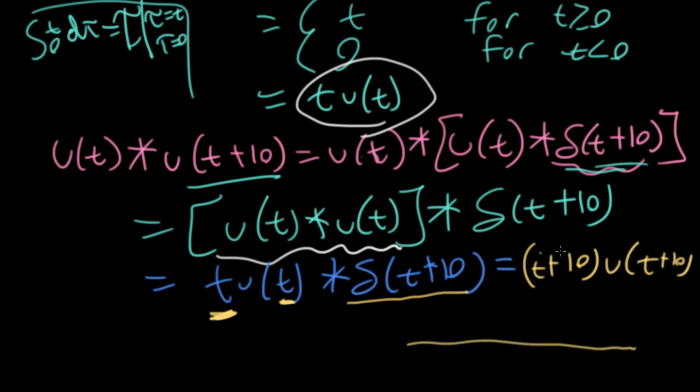And if I wanted to plot it, I have my unit step function that's been, if this is zero here, I have my unit step function that's been shifted down here to minus 10. And so it starts and goes up like that with a slope of one.